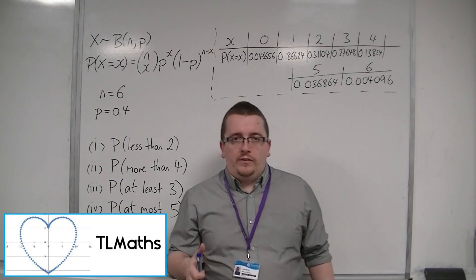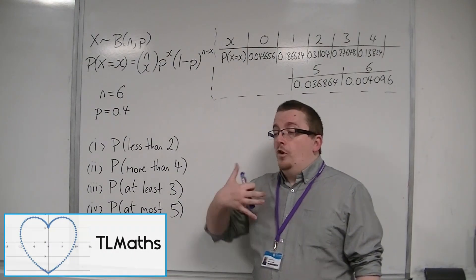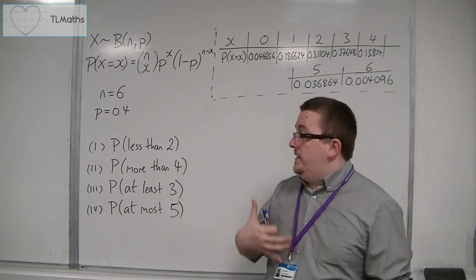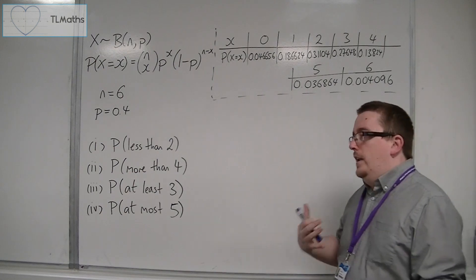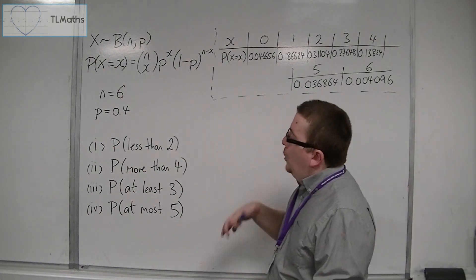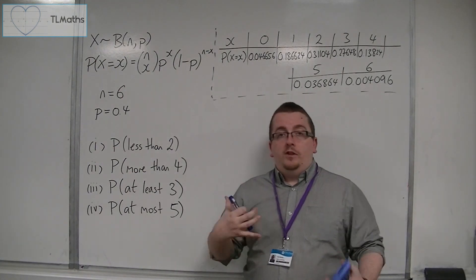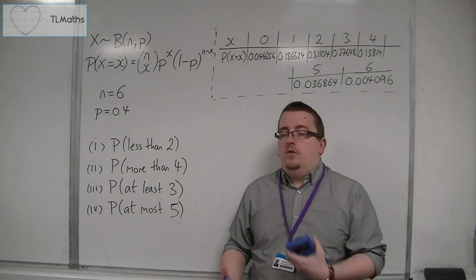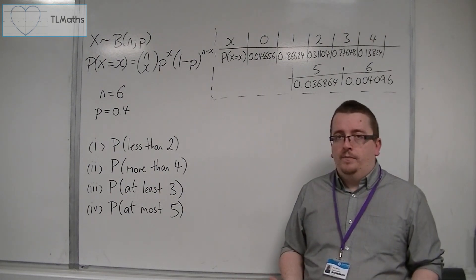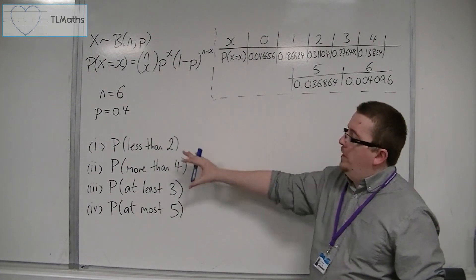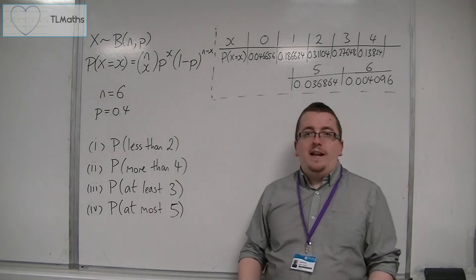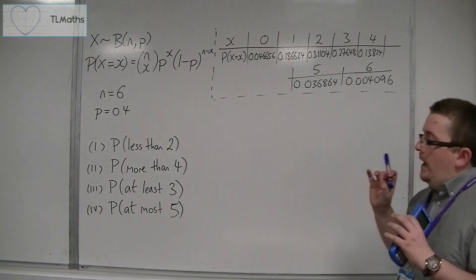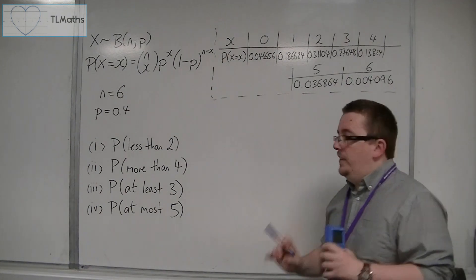Following on from the previous example, what I want you to get used to is really the language that is used in the exam. Understanding for the binomial what it means when it's asking for the probability of less than 2, or more than 4, of at least 3, or at most 5. So we want to be able to turn these worded problems into a numerical problem, making sure that we understand what these things mean.